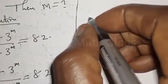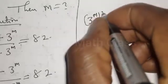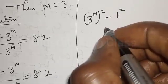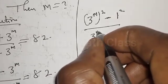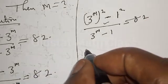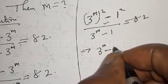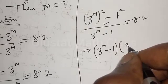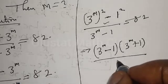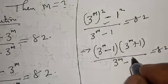Let me repeat it here again. We have 3 raised to power m, squared, minus 1 squared, over 3 raised to power m minus 1, equal to 82. Now here we have a difference of two squares. This implies that we have 3 raised to power m minus 1, multiplied by 3 raised to power m plus 1, over 3 raised to power m minus 1, equal to 82. This cancels.